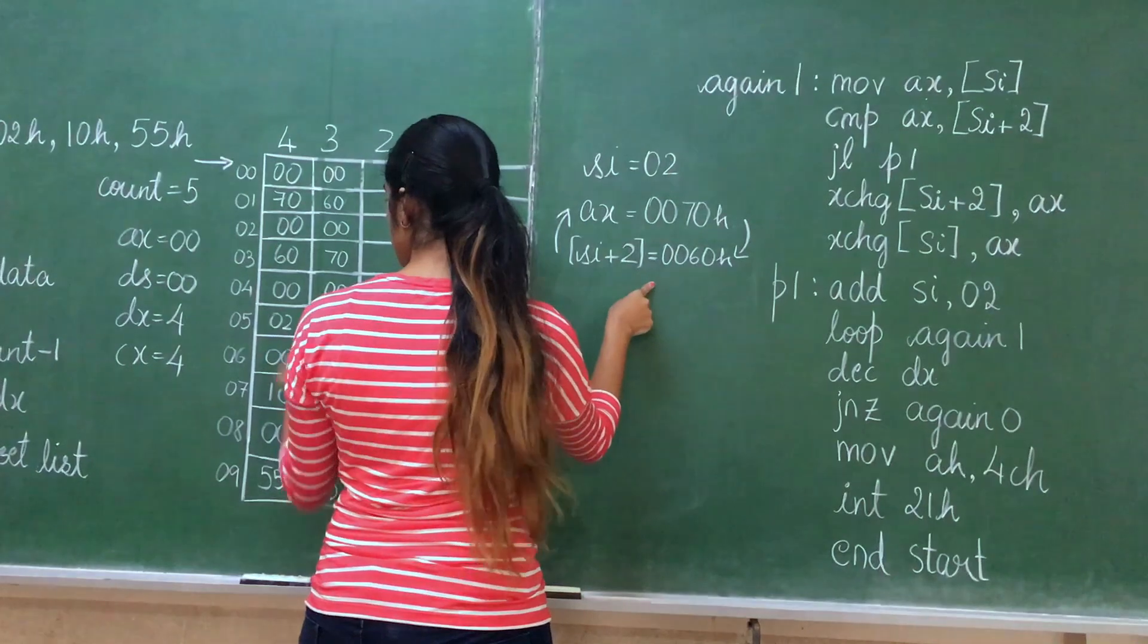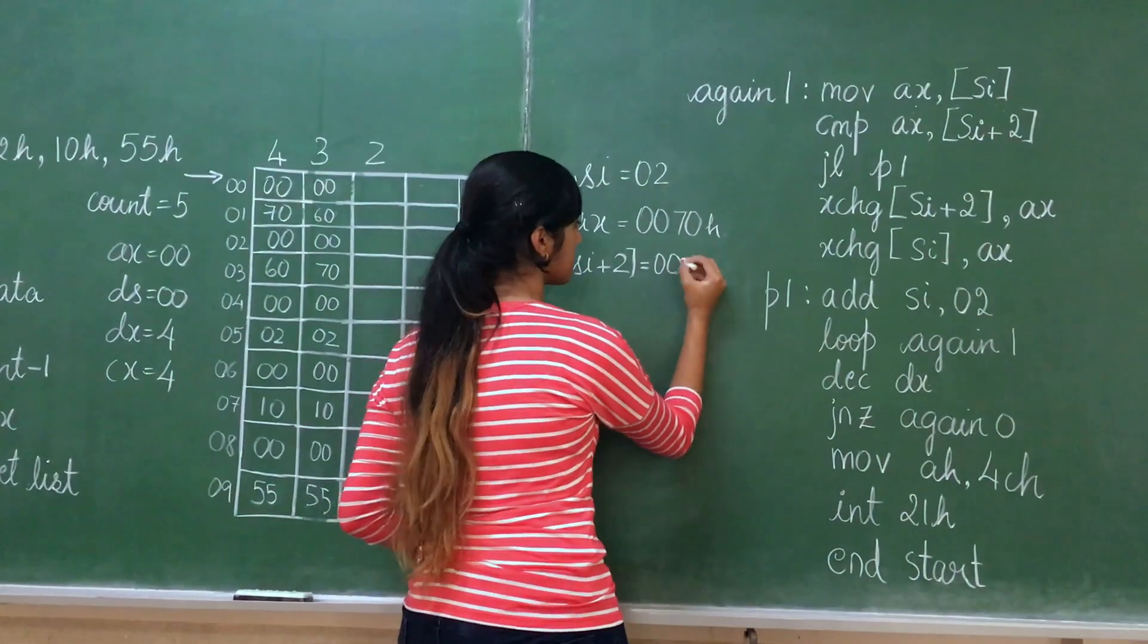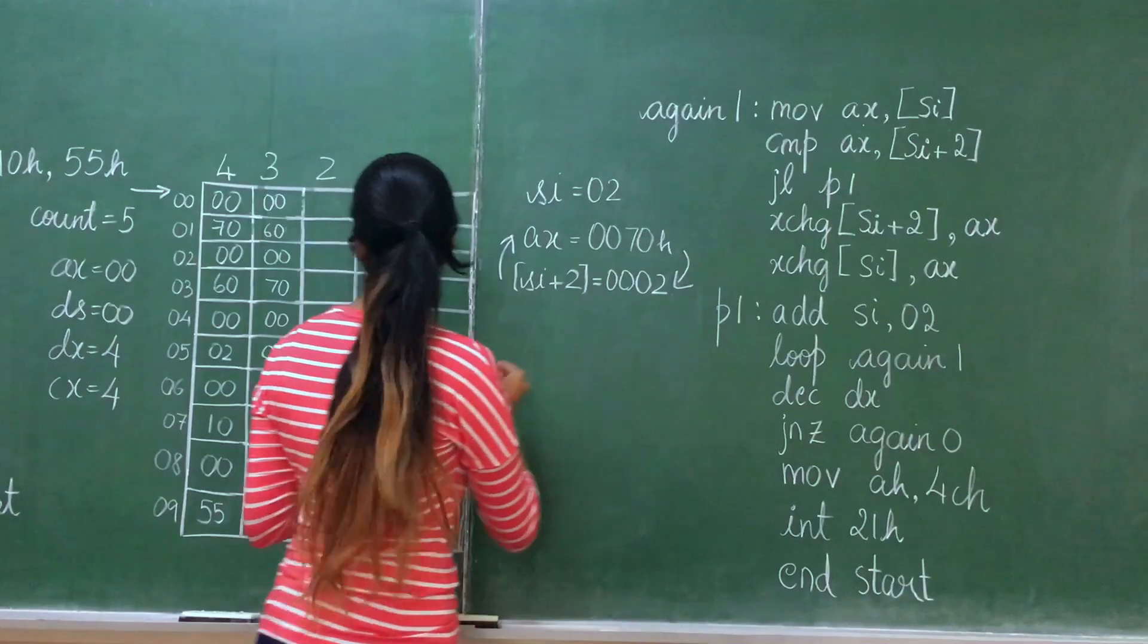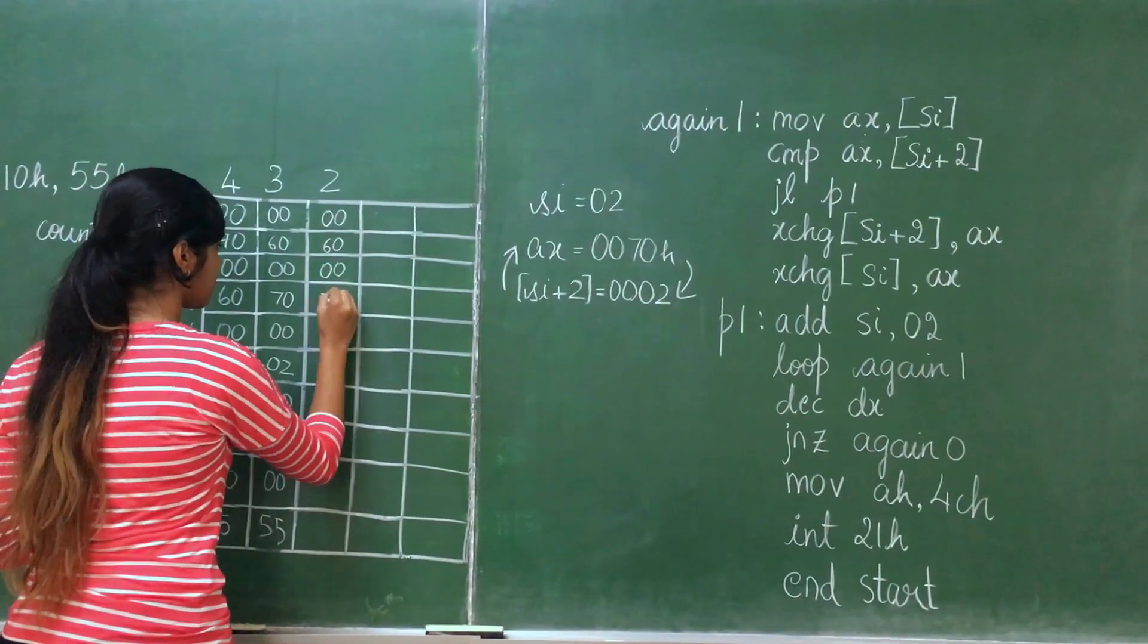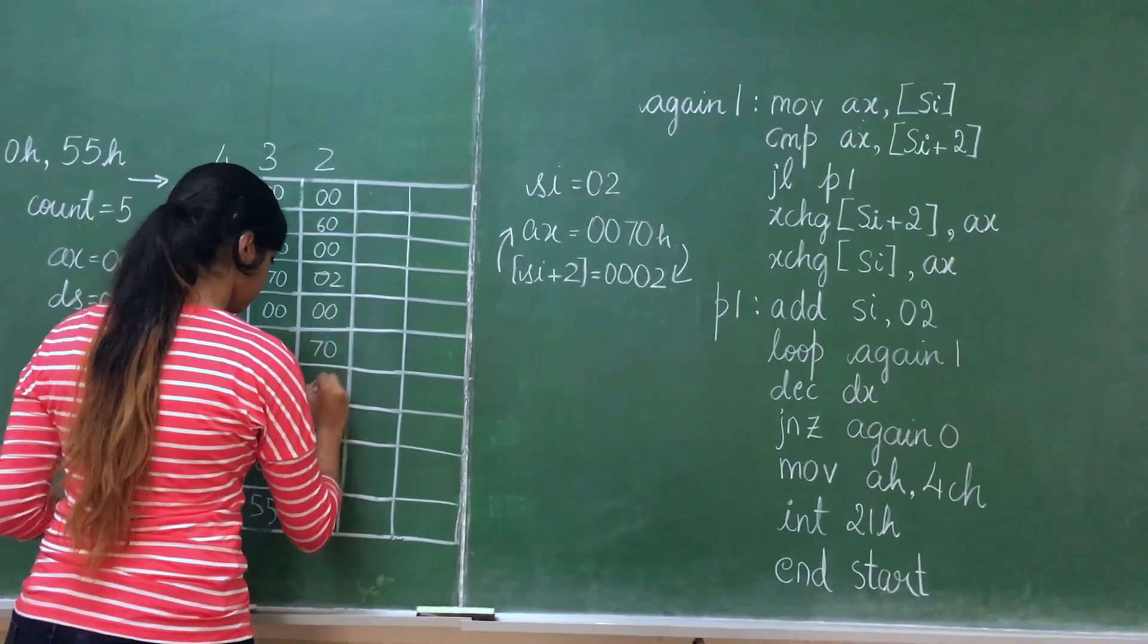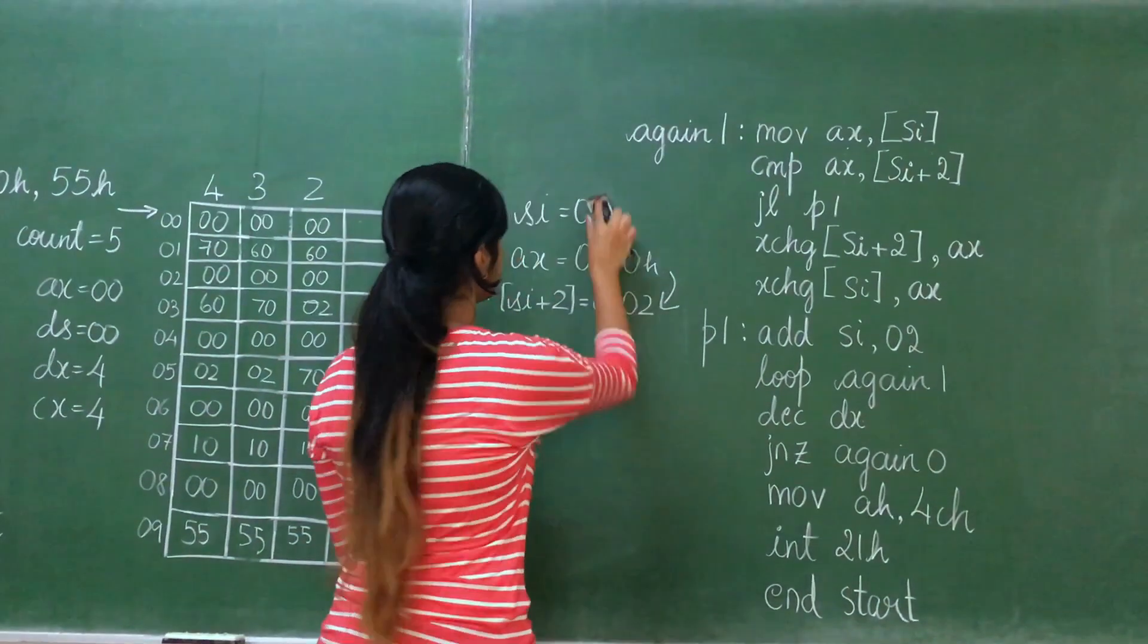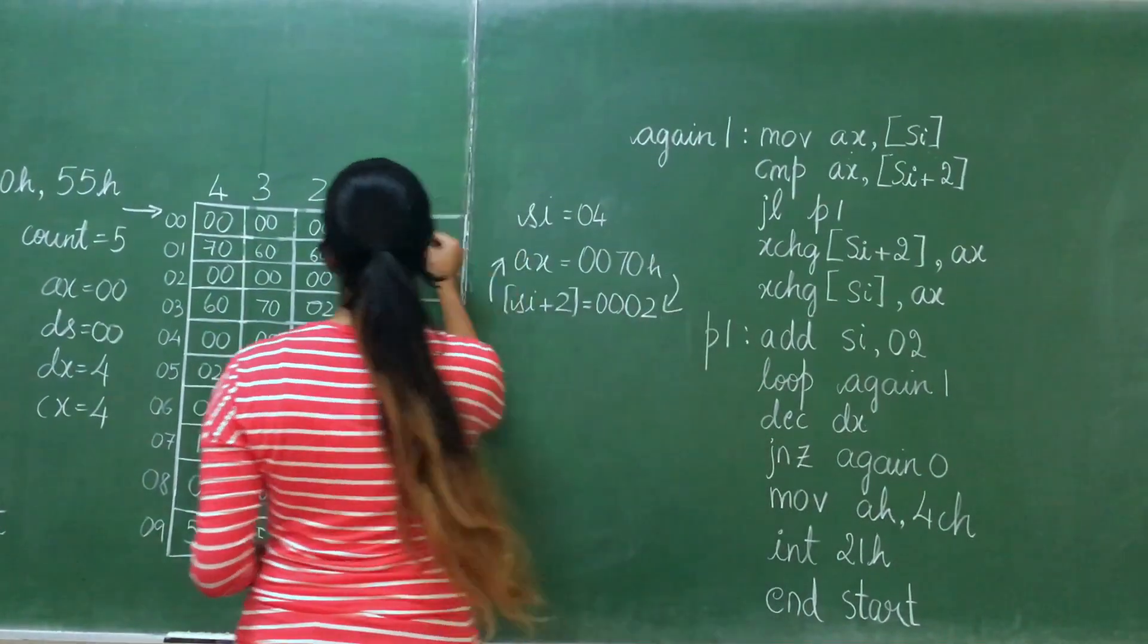Then we compare with respect to AX. 0070 is greater than 0002, so again we swap the values. After swapping, the values will be exchanged. After swapping, SI is incremented by 2. SI will be 04. Then we loop Again1, so count is decremented.